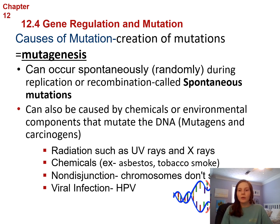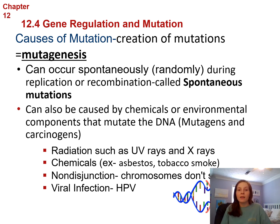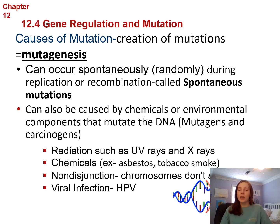Mutations can also be caused by chemicals or environmental components — these are called mutagens or carcinogens. Examples include radiation, UV rays (that's why you shouldn't go outside without sunscreen), and X-rays (that's why they put lead coverings on parts of your body during X-rays). Chemicals like asbestos in older homes and tobacco smoke are also chemical carcinogens.